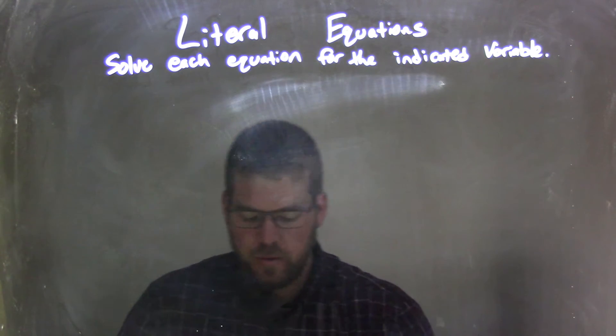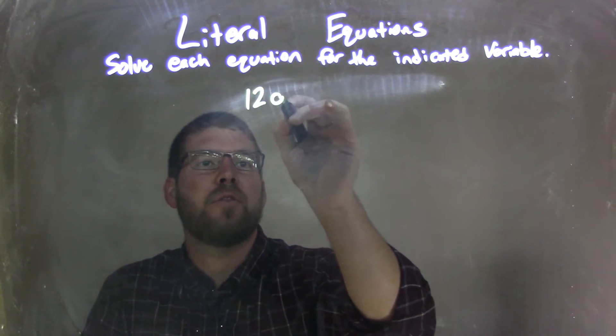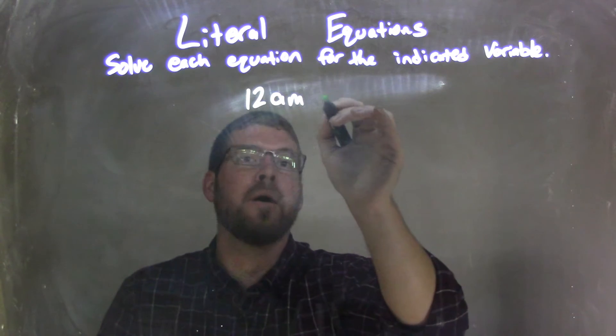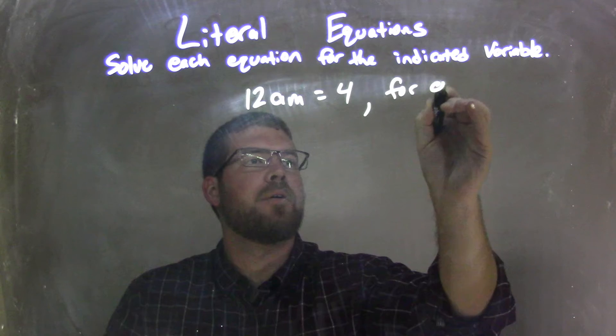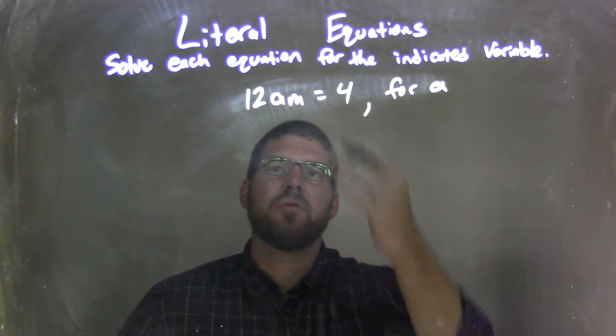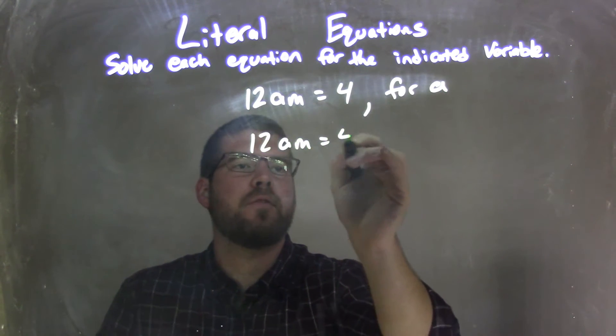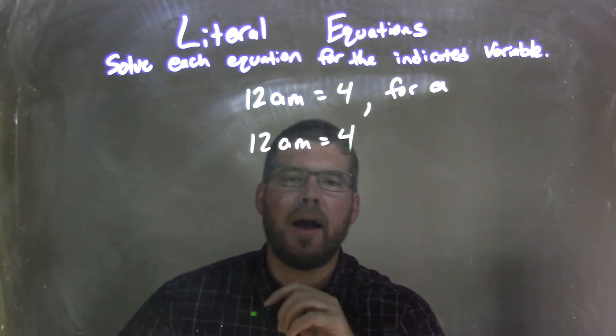So if I was given this equation, 12am, not pm, is equal to 4, and we're solving that for the letter A. So I'm going to rewrite this: 12am equals 4, and know that I need to solve for A.